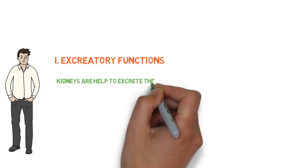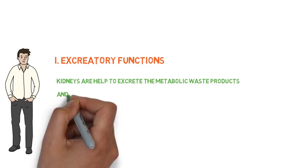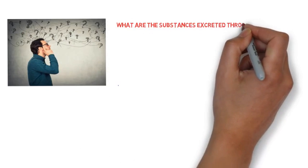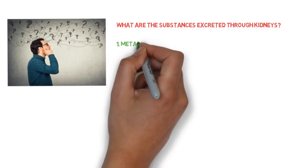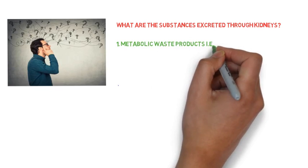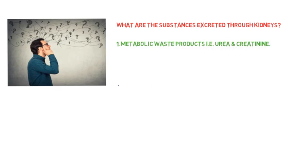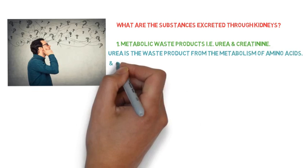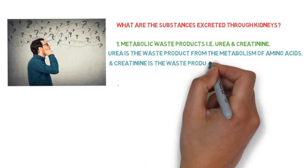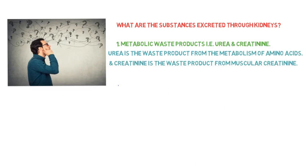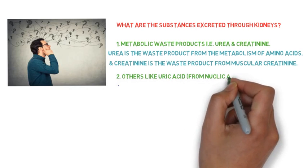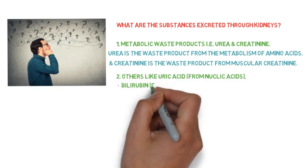The question comes to mind: what are the substances excreted through the kidneys? Number one, metabolic waste products — mainly urea and creatinine. Urea is the waste product from the metabolism of amino acids, and creatinine is the waste product from muscle creatine. Other metabolic waste products include uric acid from nucleic acid metabolism and bilirubin, which is the end product of hemoglobin breakdown.